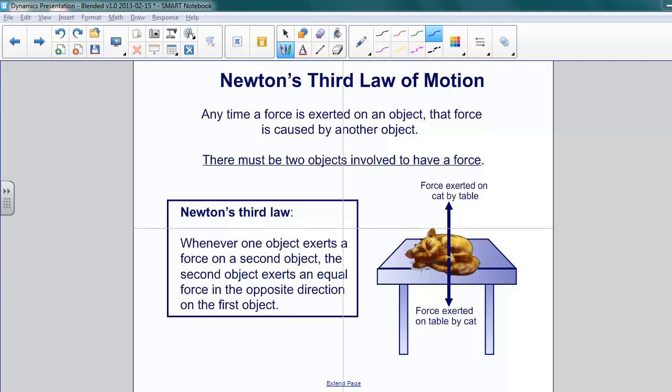So if you imagine our cat lying here on the table, the cat exerts a force onto the table in a downward direction, and the table exerts an equal force on the cat in an upward direction. They are equal and opposite.